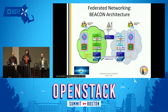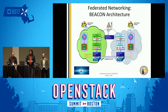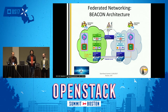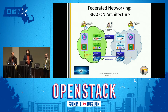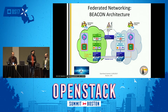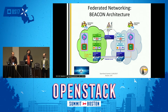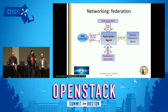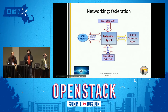Here is a high-level overview of the BEACON architecture. Focusing on the blue boxes, we have a federation management system that interacts with the cloud management subsystems on both clouds. Underneath the network management layer, we have the federation agent, which is the component tasked with establishing federated networks by interacting with the federated data path and establishing a federated tunnel.